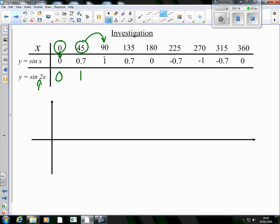So that means when I do sin of double 45, I get 1. When I do sin of double 90, I'm doing 180, so that's going to give me 0. When I do sin of 135, or sin of double 135, that's 270, so sin of double 135 will give me negative 1. And sin of double 180 gives me 0.